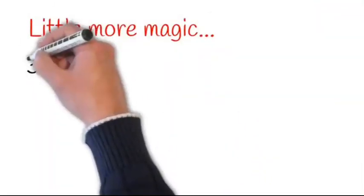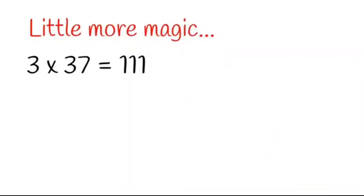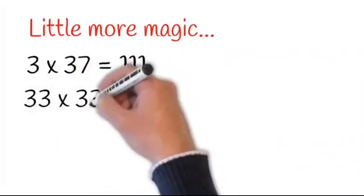So there are a few more interesting simple magic of multiplications. So 3 into 37 is equal to 111.